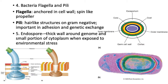Flagella are anchored to the cell wall and help with movement - they spin like a propeller and lack the 9+2 microtubule arrangement seen in eukaryotes. On gram-negative cells, pili are hair-like structures important for adhesion and genetic exchange; we'll discuss their role in transformation, transduction, and conjugation.